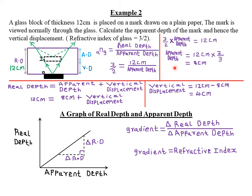Once we have the real depth and the apparent depth, recall that real depth equals apparent depth plus the vertical displacement. Substituting the values: real depth is 12 centimeters — the thickness of our glass block — equals apparent depth of 8 centimeters plus the vertical displacement. Making vertical displacement the subject, vertical displacement equals 12 centimeters minus 8 centimeters, which equals 4 centimeters.